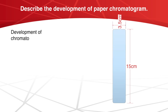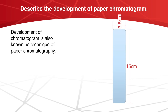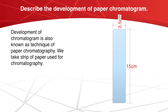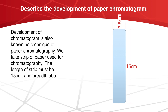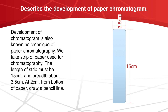Development of chromatogram is also known as the technique of paper chromatography. We take a stripe of paper used for chromatography. The length of the stripe must be 15 cm and breadth about 3.5 cm. At 2 cm from the bottom of the paper, draw a pencil line. This is called the base line or start line.